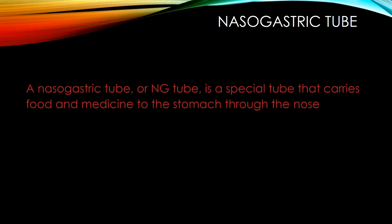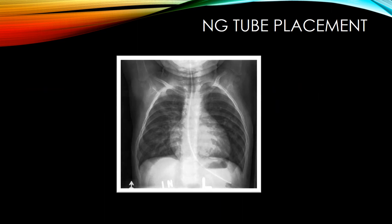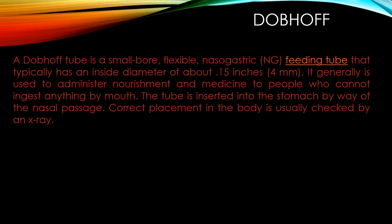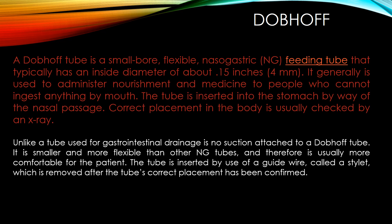A nasogastric or NG tube is a special tube that carries food and medicine to the stomach through the nose. A Dubhoff tube is a small, soft, flexible nasogastric feeding tube approximately four millimeters in diameter, generally used to administer nourishment and medicine to people who cannot ingest anything by mouth. It is inserted into the stomach via a nasal passage, and correct placement is usually confirmed by x-ray. Unlike a tube used for GI drainage, there is no suction attached to a Dubhoff tube. It is smaller and more flexible than other NG tubes, making it more comfortable for the patient. The tube is inserted using a guide wire called a stylet, which is removed after the tube has been placed and confirmed.